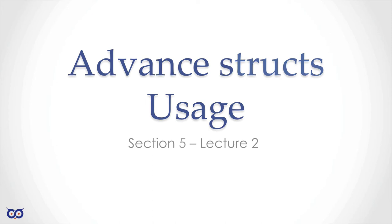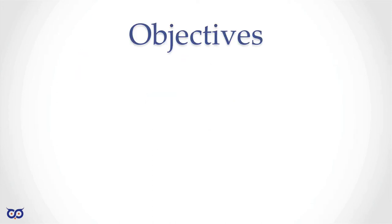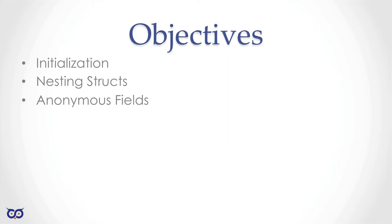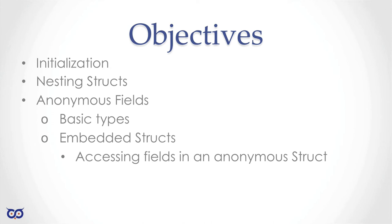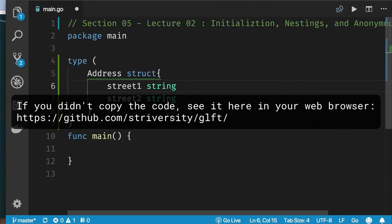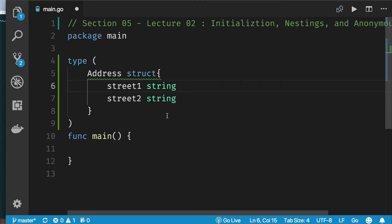Welcome to Section 5, Lecture 2 — Advanced Struct Usage. In this lecture we're going to look at structure initialization, how you can nest structures within structures, anonymous fields and when to use them, how to use basic types like string and int as anonymous fields, how to embed other structures using anonymous fields, how to access field names within embedded structures, and how to deal with ambiguity.